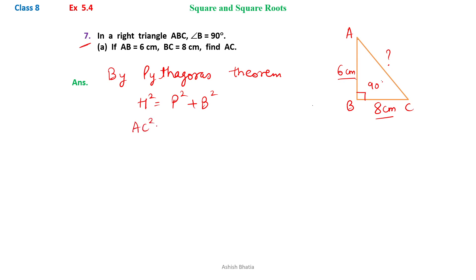Now here the hypotenuse is AC, perpendicular is AB and base is BC. Now the values we will put: AB is 6 square, BC is 8 square, so it is 36 plus 64. That will become 100, so AC square is 100.